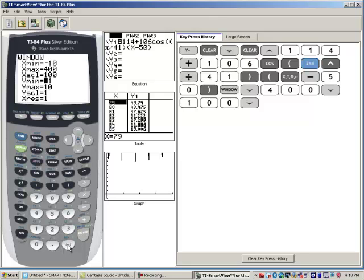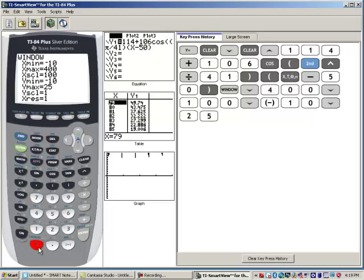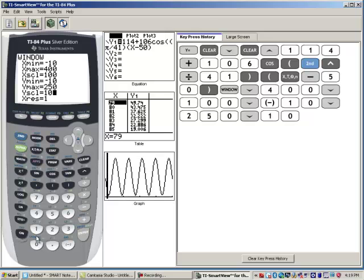And then my y minimum, how far down do we need to see? Not very far down. Let's go down negative 10. Y maximum, how far up do we need to see? Well we at least need to see 220, so let's see 250. Y scale, let's go by tens, I guess. And there we have our graph there. And we go up and then down.